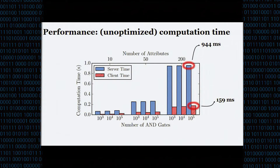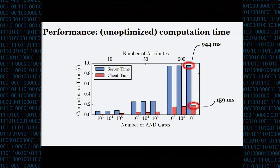Q: I'm a little confused by the distinction between formulas and circuits. A: A Boolean formula cannot reuse internal wires, whereas in a circuit you can. If you take an arbitrary circuit and convert it to a Boolean formula, there's an exponential blowup in the worst case.